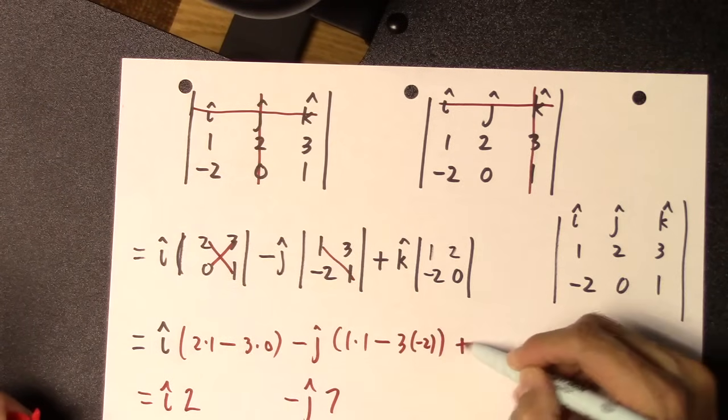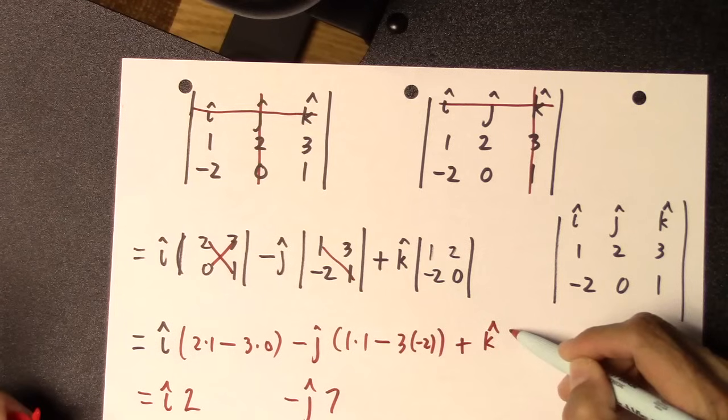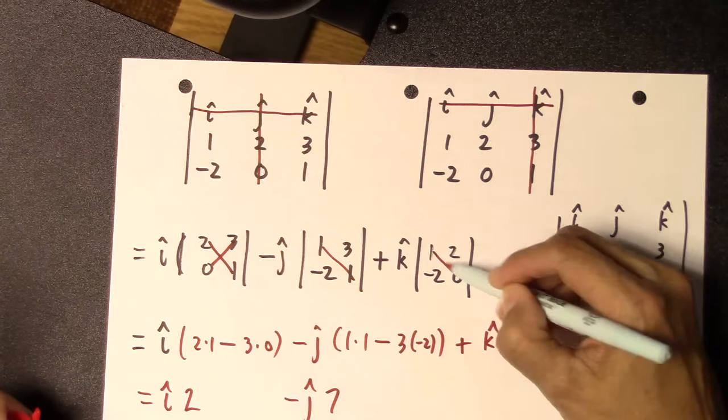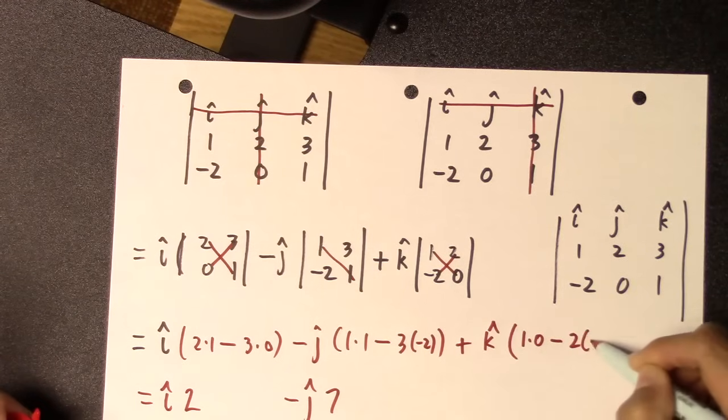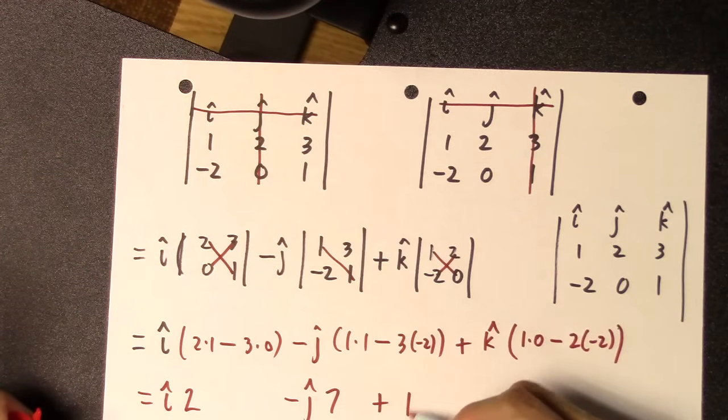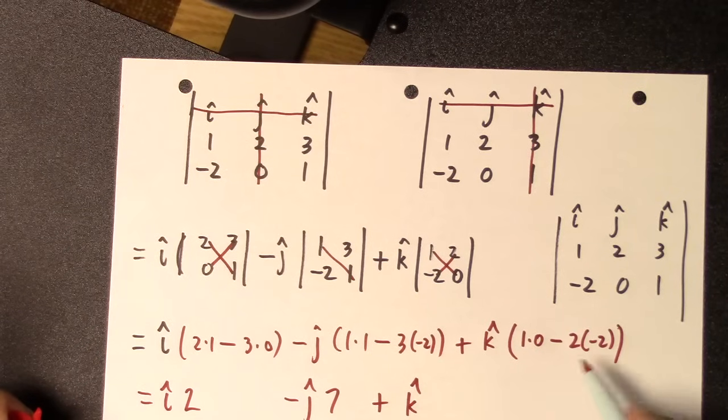And then you go to the third term. And that's going to give you 1 times 0, minus 2 times minus 2. And that will give you 4.